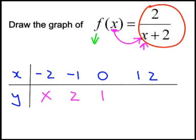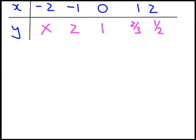When X is equal to 0, we'll have 2 divided by 2 is 1. When X is equal to 1, we'll have 2 divided by 3, which is 2 thirds. And when X is equal to 2, we'll have 2 over 4 or we will have a half.